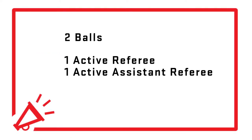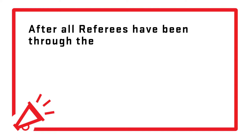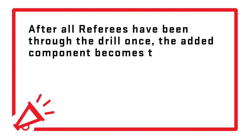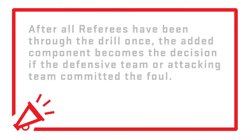This drill includes two balls, one active referee, one active assistant referee, and three instructors. After all referees have been through the drill once, the added component becomes the decision of whether the defensive team or attacking team committed a foul.